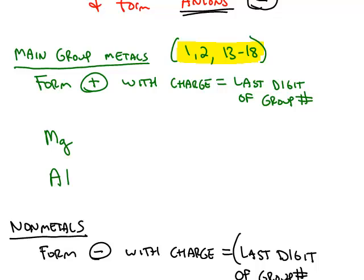So first let's look at the metals. Metals are either main group or they're transition metals. The main groups on the periodic table are the first two columns and then the last six columns. So 1 and 2 and 13 through 18. We'll talk about the other transition metals later on.